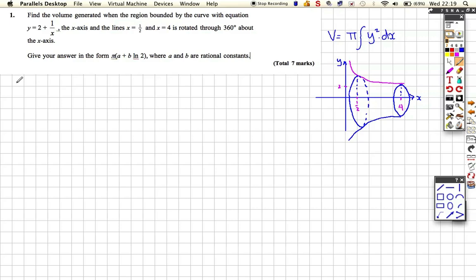Okay, let's crack on with it. So we need to know what y squared is. We know that y is 2 plus 1 over x, so therefore y squared is going to be 2 plus 1 over x all squared, which when we multiply it all out is 4 plus 4 over x plus 1 over x squared. So the volume of revolution is given by pi integral 4 plus 4 over x plus 1 over x squared with respect to x.